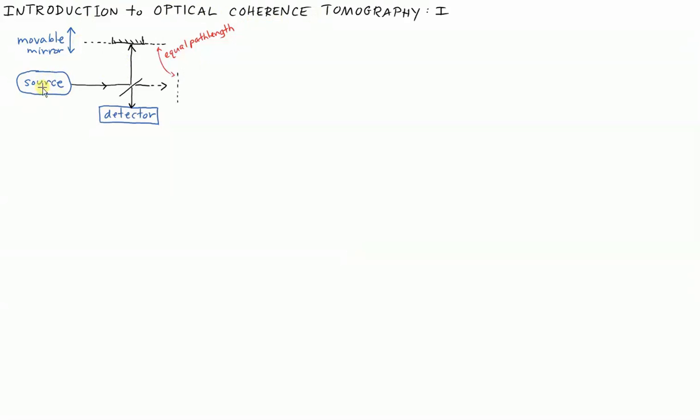You've got a source with some sort of spectrum. We'll explore various options in this tutorial. The source is directed off of a beam splitter. Some of the light goes to a reference mirror which is movable up and down, and some of the light continues towards a region where we have some sort of specimen.